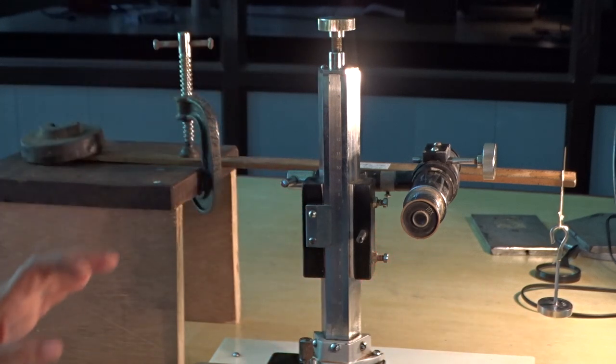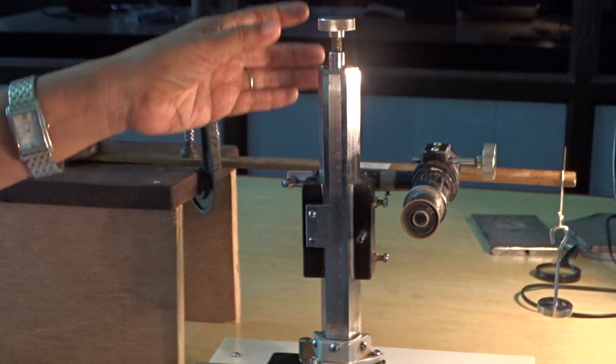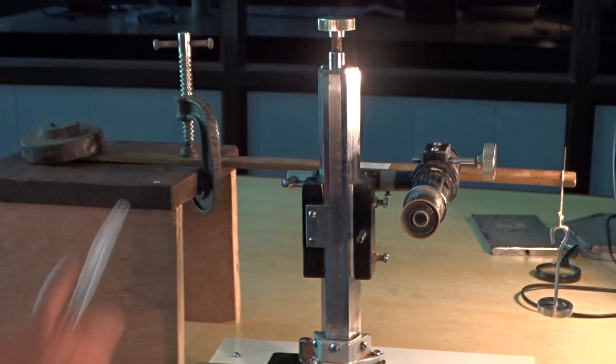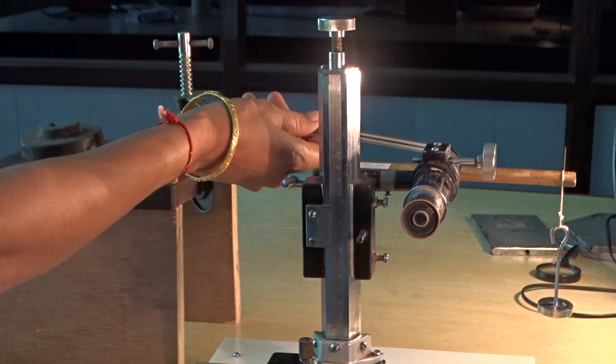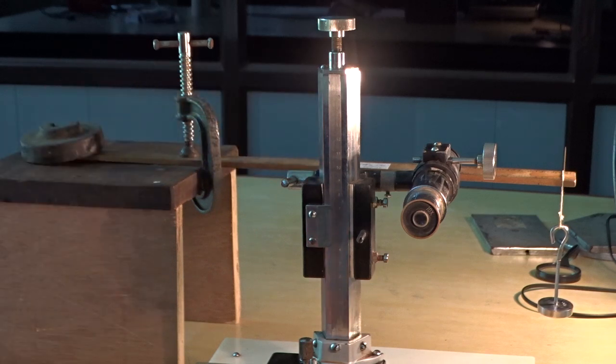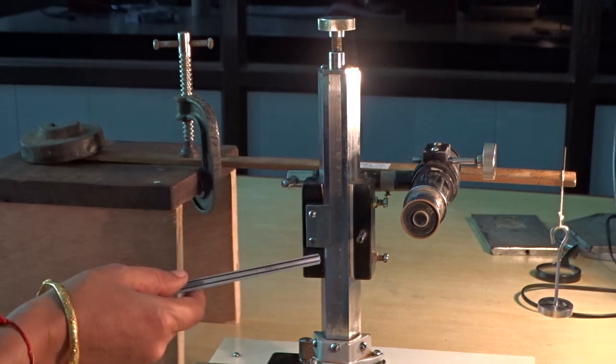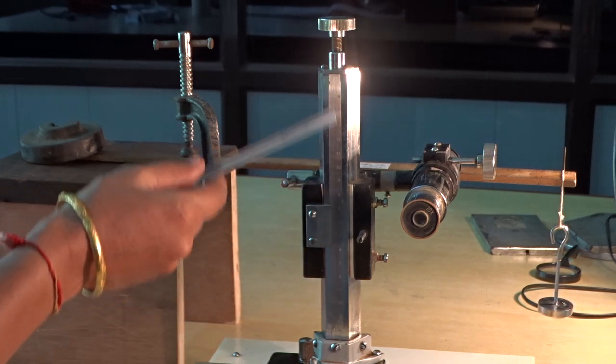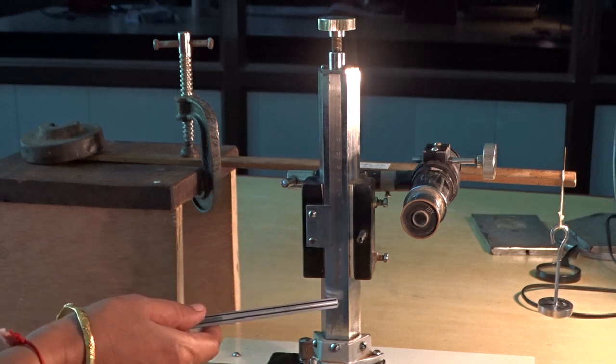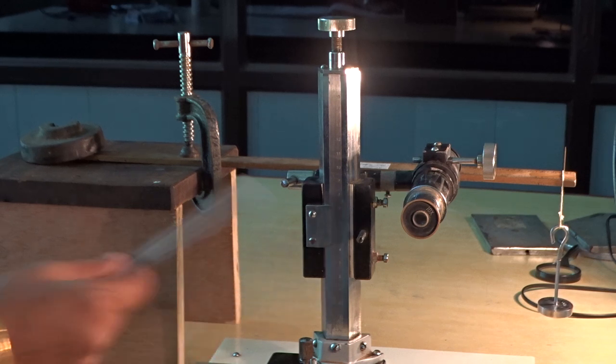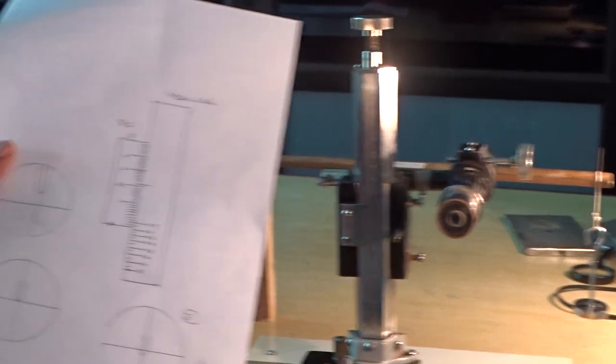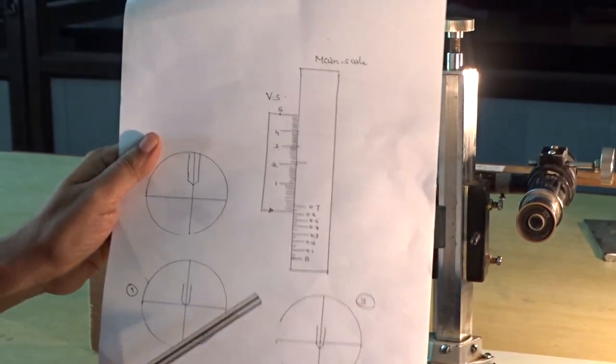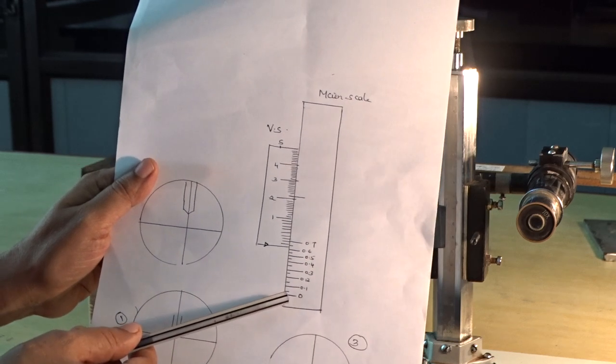For taking readings, we use a travelling microscope. This is the travelling microscope. This is eyepiece lens and here objective lens. And it has got two scales. One is main scale, another one is a vernier scale. There are several divisions on main scale starting from 0.